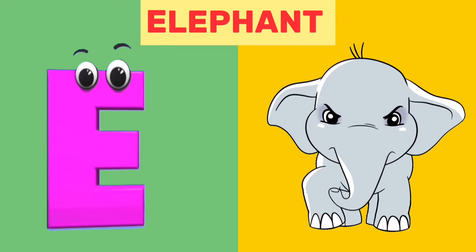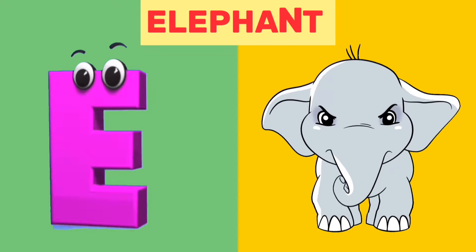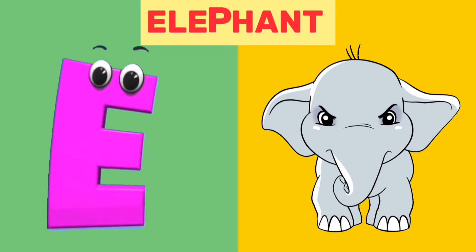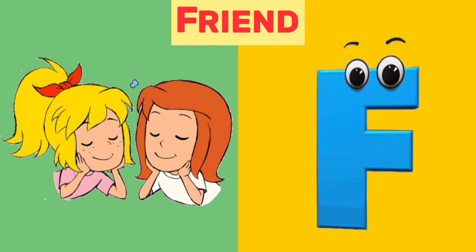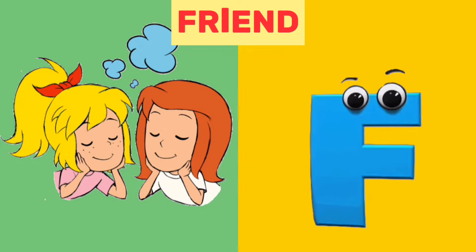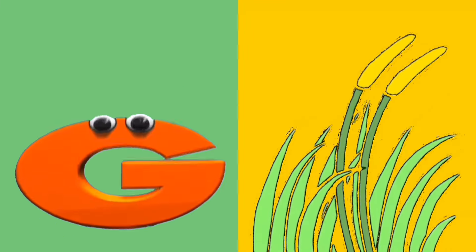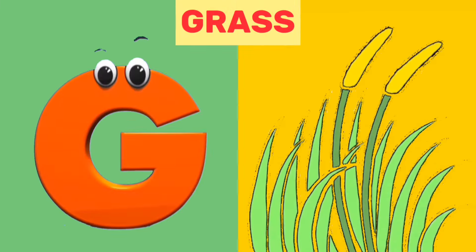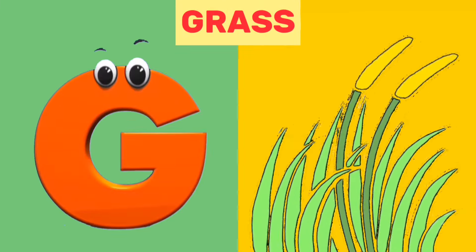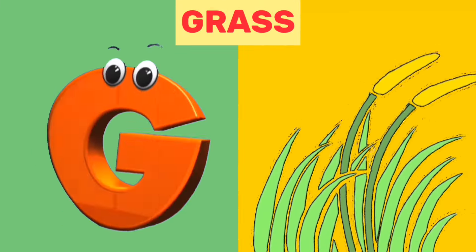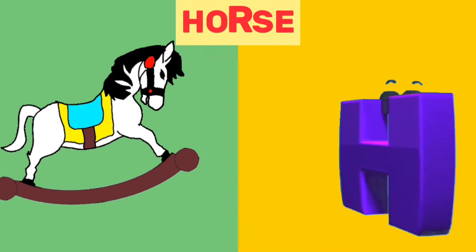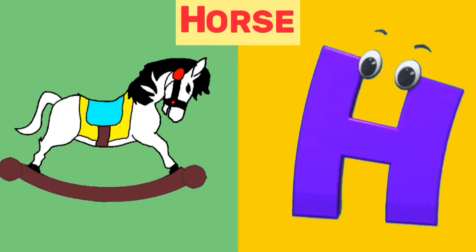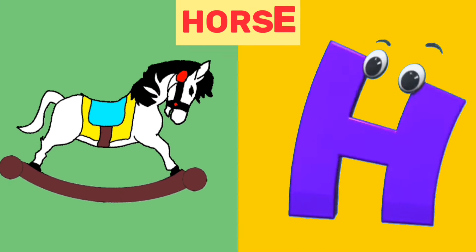E is for elephant. E, elephant. F is for friend. F, friend. G is for grass. G, grass. H is for horse. H, horse.